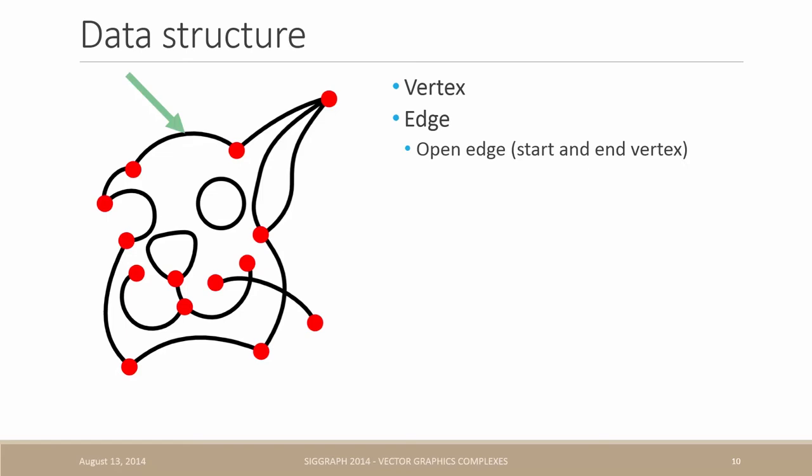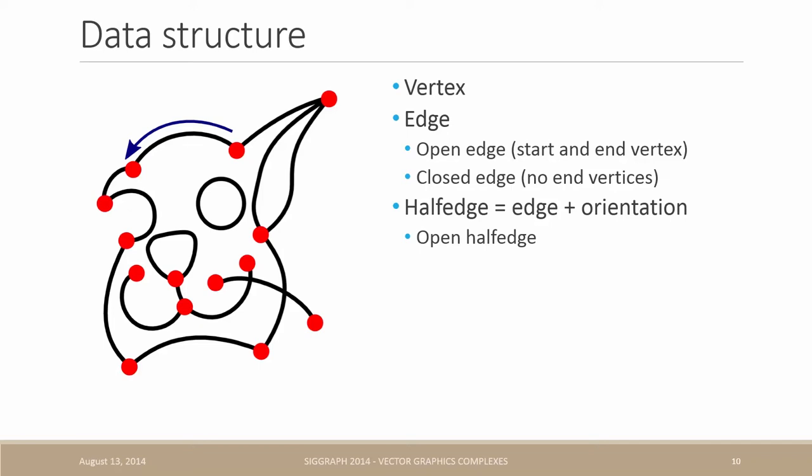There are two types of edges. The first type is the open edge which has a start and an end vertex. Notice that it is possible for the start and end vertex to be equal. The second type of edge is the closed edge which does not have end vertices at all. Another object is the half edge which is the data of an edge and a given orientation. This half edge is an open half edge since it refers to an open edge while this one is a closed half edge referring to a closed edge.